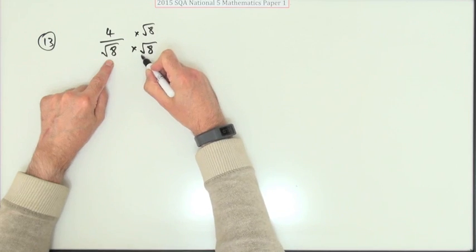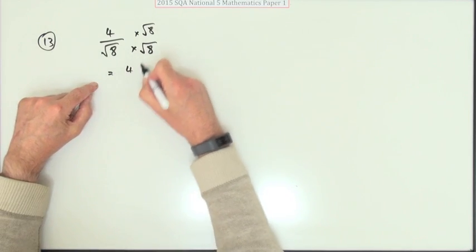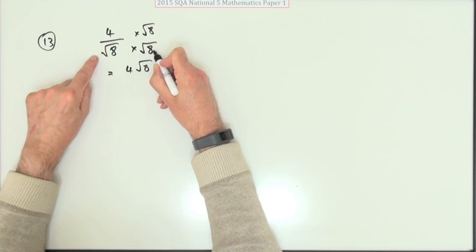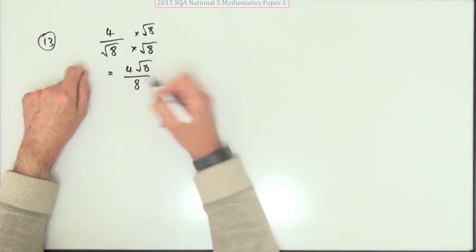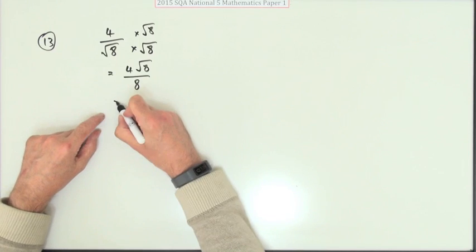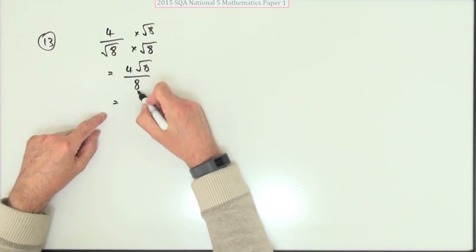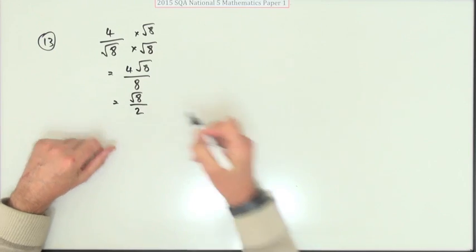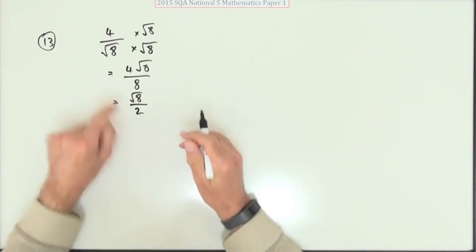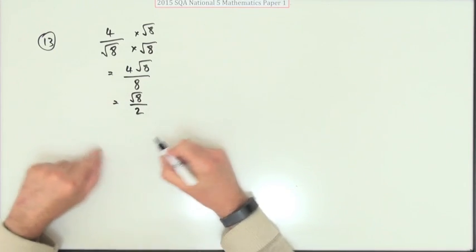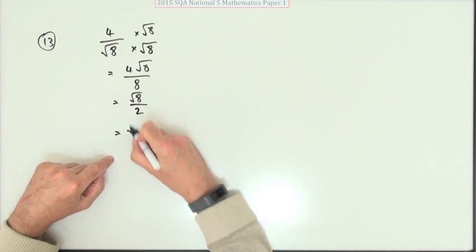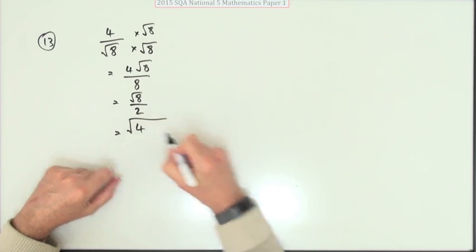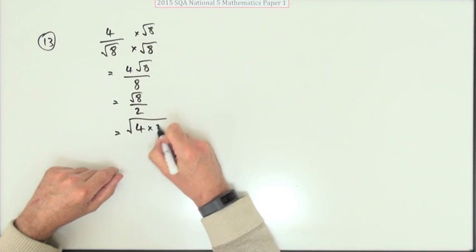Multiplying by root eight is guaranteed to remove that root sign, so you're left with four times root eight on top, and root eight times root eight just gives you eight. Then four over eight cancels, leaving root eight over two.